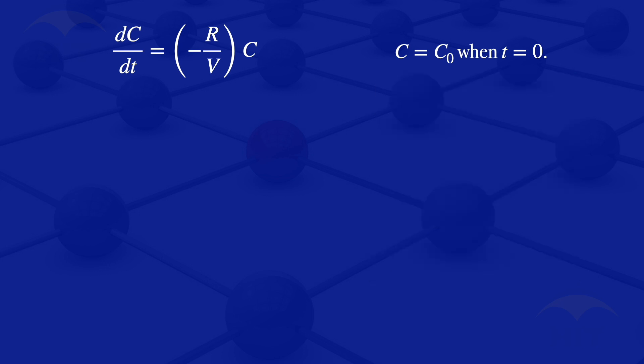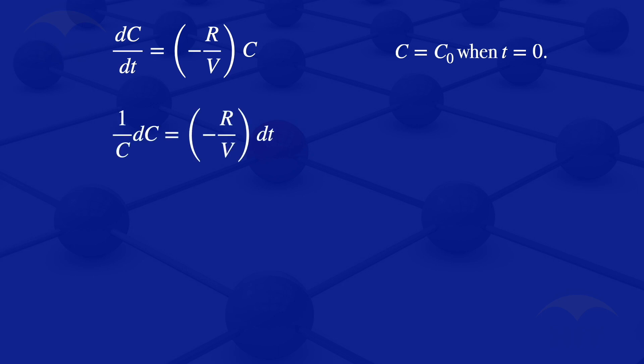For separation of variables, we check if we can put the dependent variable on the left-hand side and the independent variable on the right-hand side. Here, C is the dependent variable, so I take it to the left-hand side, and dT, the independent variable, to the right-hand side. Our equation becomes: 1 divided by C · dC is equal to minus R divided by V multiplied by dT.